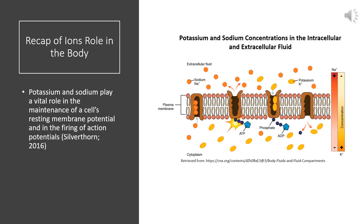As first year physiology students, you may have a basic understanding of the role ions such as potassium and sodium play in the maintenance of the cell's resting membrane potential and in the firing of action potentials. The image on the right shows you the relative concentrations of sodium and potassium inside and outside the cell, but little may be known about how chloride ions can exert physiological effects via neuronal excitation and inhibition.